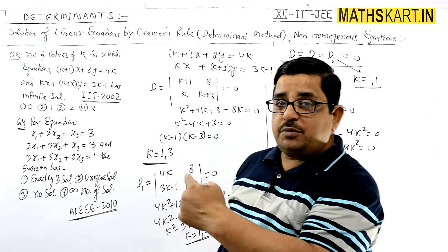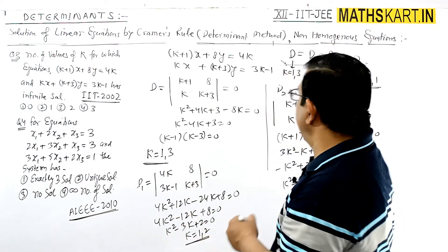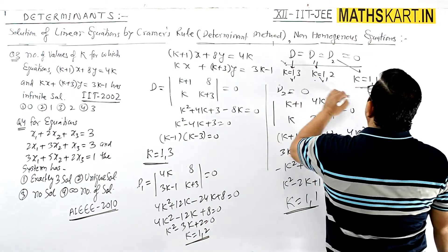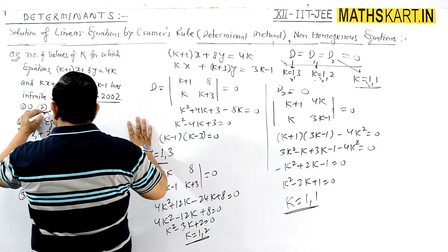The question asks for the number of values of k, which is one, since k = 1 is the only common value satisfying all three conditions. Therefore, the answer is one, and option two is correct.